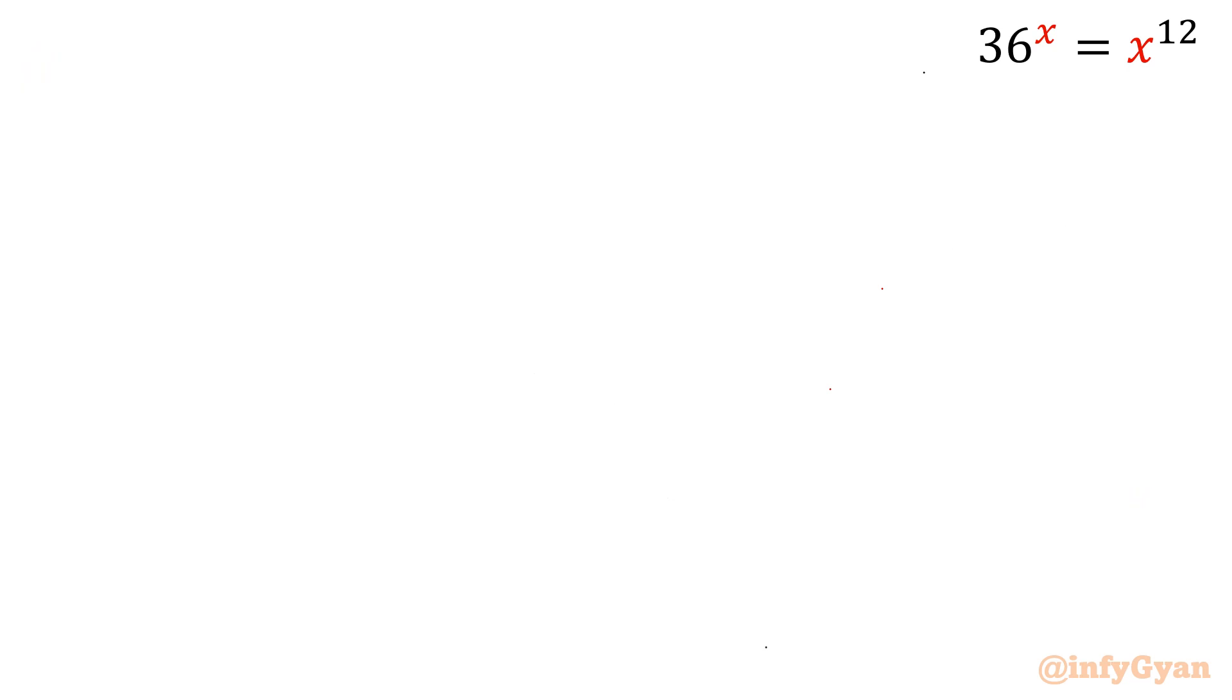Third method, Lambert W function method. So let me begin by taking ln both sides. I will write x ln 36. Now we know the property, x ln 36 equal to 12 ln x.